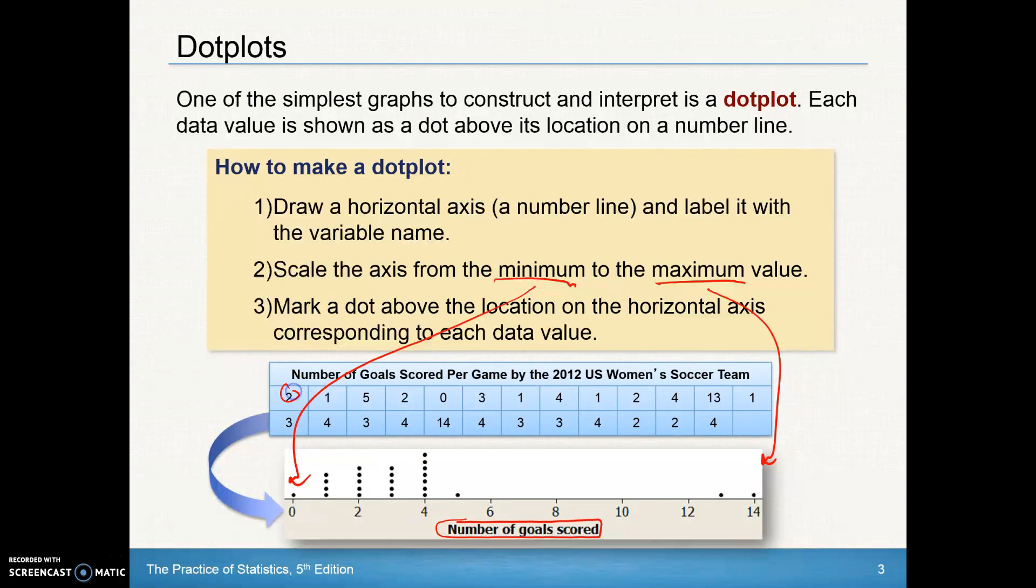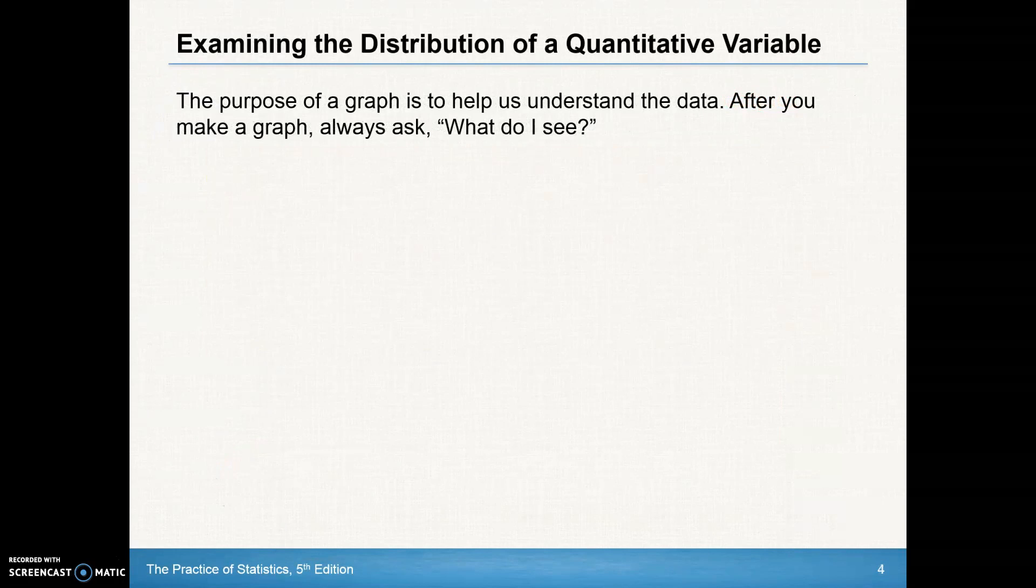And then we just mark a dot above the location on the horizontal axis corresponding to each data value. So you can see here we've got a two, so we made a dot here at two. We've got a dot at one, and there's a dot at one. Now, the key is as you build these dots up, make sure that you are keeping them the same size. Make sure that if this one goes up four, that every place where it's four up is right across from each other. So be careful, be precise with these graphs. Don't be sloppy with those.